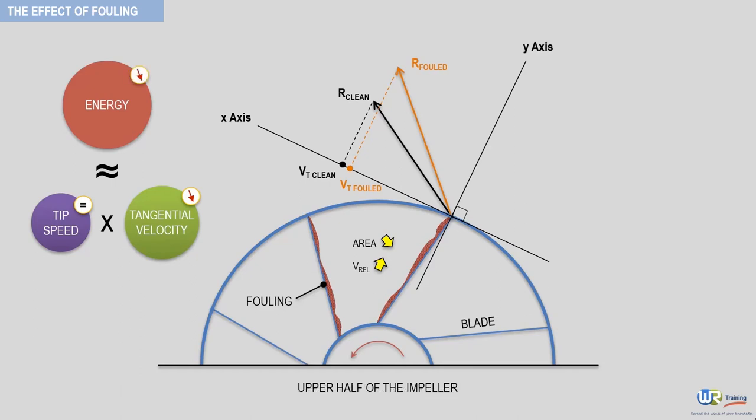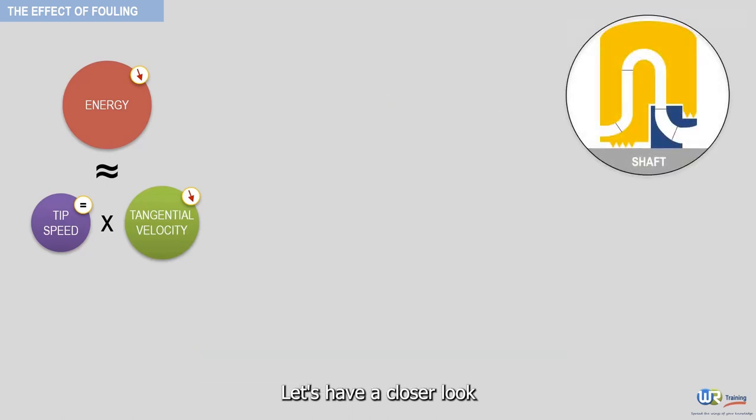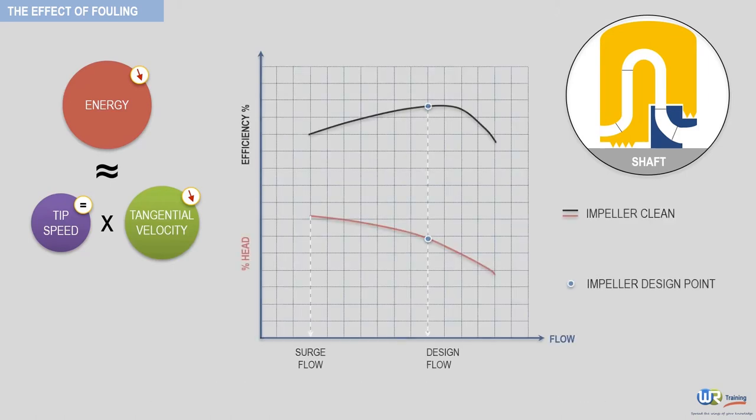In addition, the non-uniform distribution of the foulant will reduce the efficiency of the impeller stage. Let's have a closer look. Shown now on screen is the side view of a clean impeller with its corresponding performance curve, namely the head capacity curve and the efficiency curve.